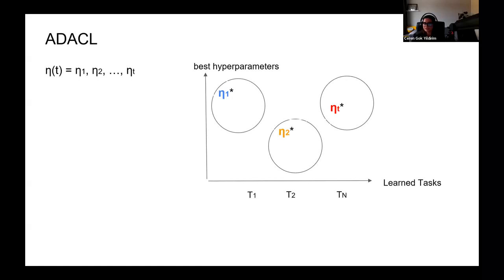AdaCL defines the regularization magnitude, learning rate, or memory size per task as functions that consist of a set of incremental tasks conditioned on the current learning task and all previous tasks. In a formal context, we express eta_t as a sequence of learning rates, eta_1, eta_2, up to eta_t. And similarly, lambda_t as a sequence of regularization strengths, lambda_1 up to lambda_t. And additionally, m_t represents a sequence of memory sizes, m_1, m_2, up to m_t.